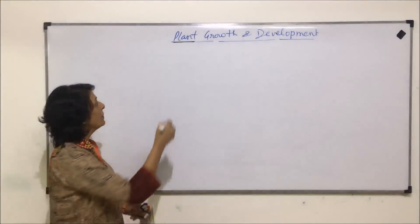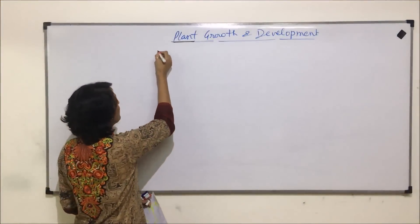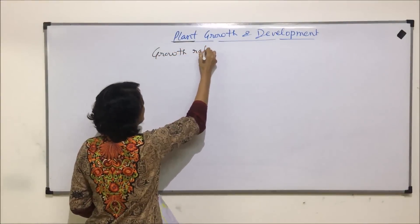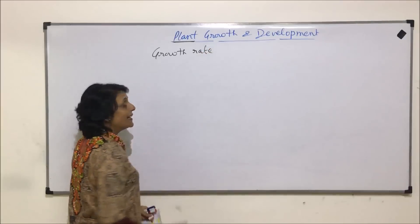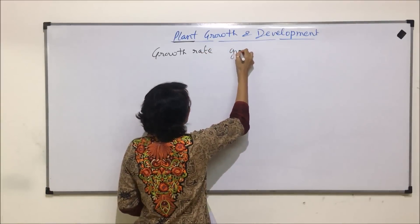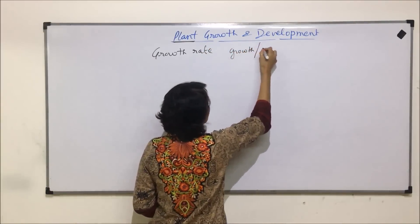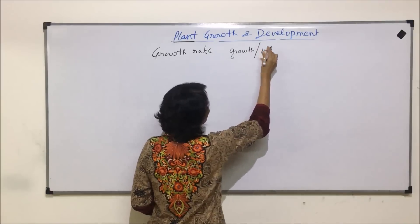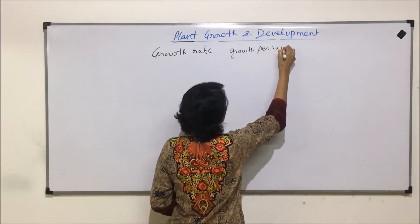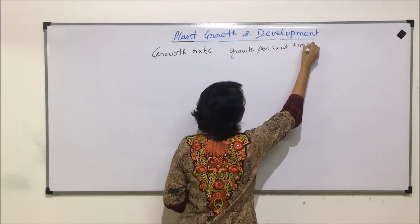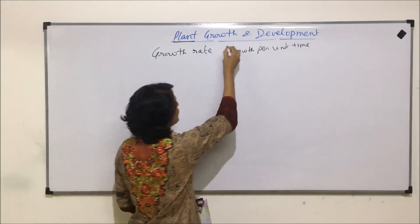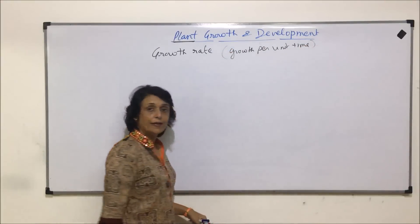Let us talk about growth rate. Growth rate is defined as growth per unit time. That means in that unit time, whatever growth has taken place is considered as the growth rate.